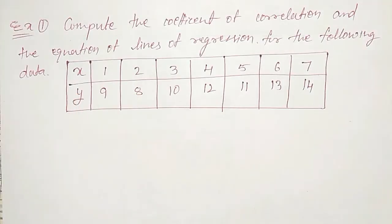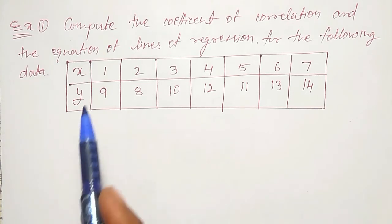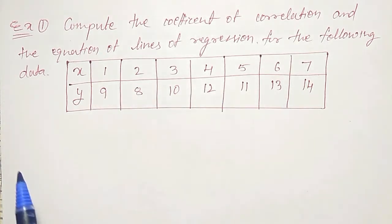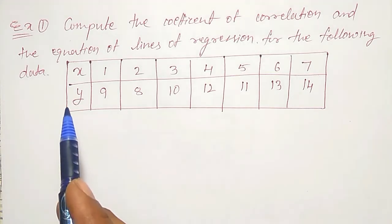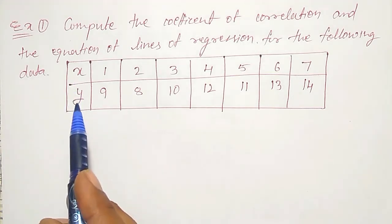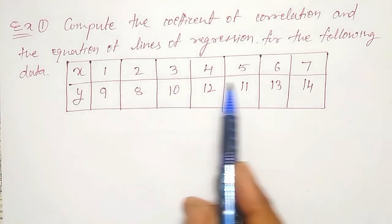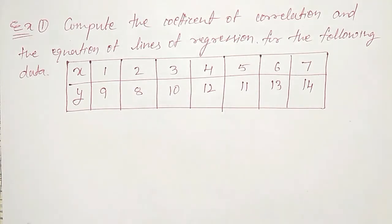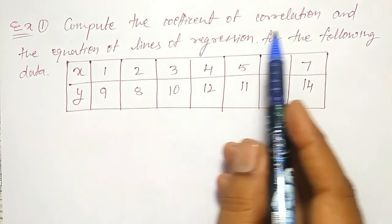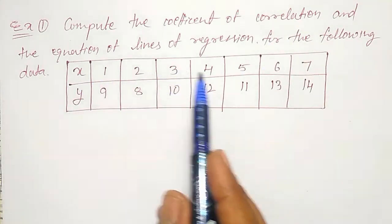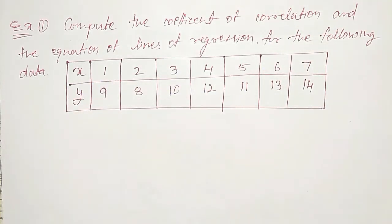In this video, I am going to solve one simple but important example — to compute the coefficient of correlation and the equation of the line of regression for the following data. The x values are 1, 2, 3, up to 7, and the corresponding y values are also given. For this, I have to find out the coefficient of correlation and the equations of the regression lines.